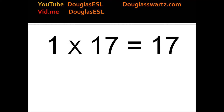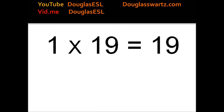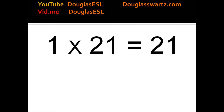1 times 17 equals 17. 1 times 18 equals 18. 1 times 19 equals 19. 1 times 20 equals 20. 1 times 21 equals 21. 1 times 22 equals 22.